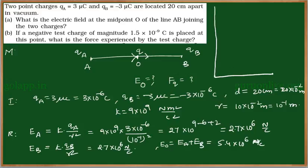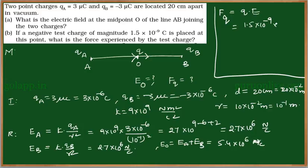To find the force at the midpoint, placing a small charge of 1.5 × 10⁻⁹ coulomb there: force at O equals Q × E, that is 1.5 × 10⁻⁹ multiplied by 5.4 × 10⁶. The coulombs cancel, leaving the unit as Newton. Multiplying 1.5 by 5.4 gives 8.1 × 10⁻³ Newtons.